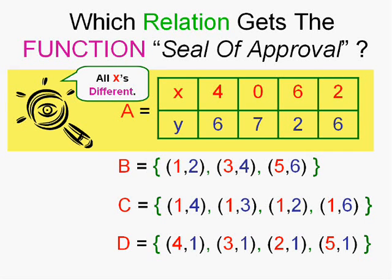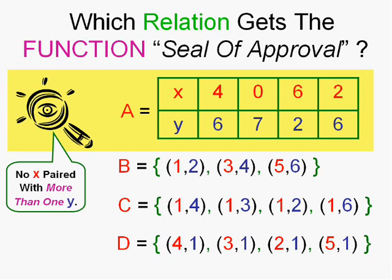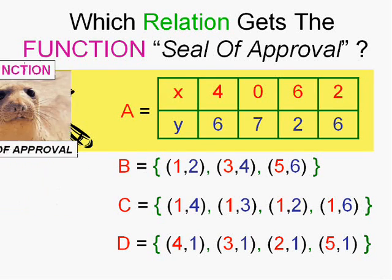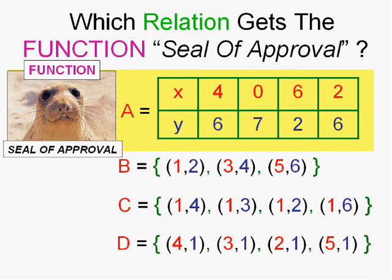All the x's, 4, 0, 6, and 2, they are all different. Now, two of them are mapped to the number 6. 4 is mapped to 6 and 2 is mapped to 6. But each of those elements, 4 and 2, is only mapped to one number. So, as long as it's only mapped to one number, in other words, each x only has one answer, then you do have a function. So, relation A gets the function seal of approval.